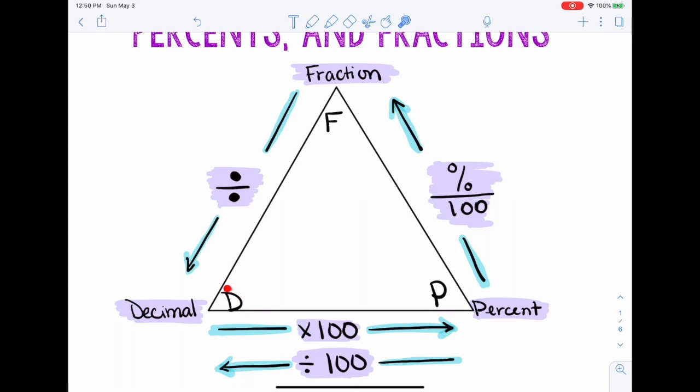Tenía un decimal, y esto es lo que cubrimos en el último video. Para cambiarlo a porcentaje, multiplicamos por 100, o movemos el decimal. Si tenía un porcentaje y lo quería cambiar de vuelta a decimal, entonces en la otra dirección, en vez de multiplicar, dividimos un porcentaje por 100. También hablamos de moviendo el decimal.